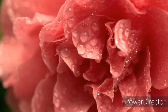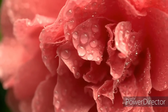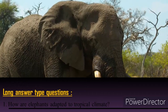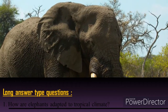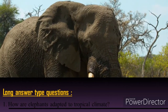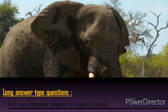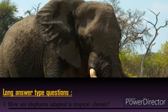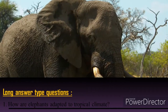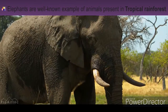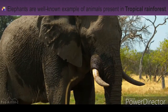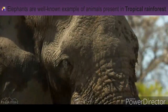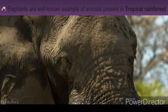I'm going to start with the long answer type questions. The first question, as per the book back exercise, is: how are elephants adapted to tropical climate? Basically, elephants are a well-known example of animals present in tropical rainforest, which you have learned before in our class.